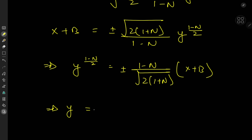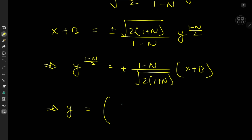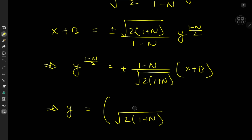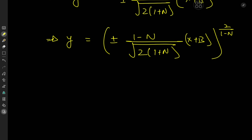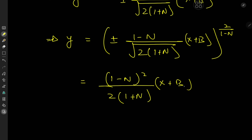We can express y in terms of x explicitly. Solving for y to the 1 minus n over 2, we get 1 minus n over root 2 times 1 plus n times x plus b, plus or minus. Squaring both sides to eliminate the plus or minus, and raising to the appropriate power, the final solution is y equal to 1 minus n squared over 2 times 1 plus n times x plus b squared, all raised to the power 1 over 1 minus n.